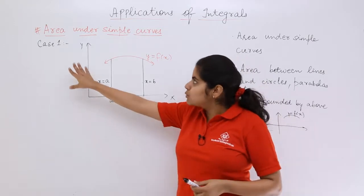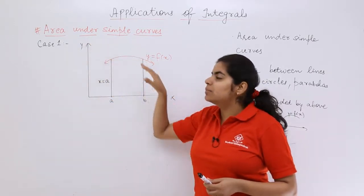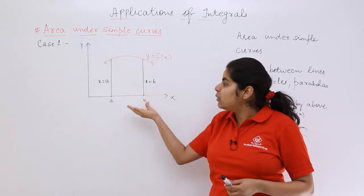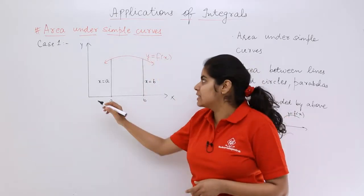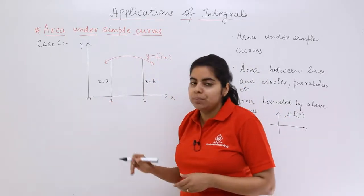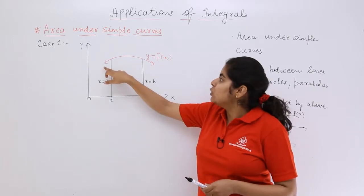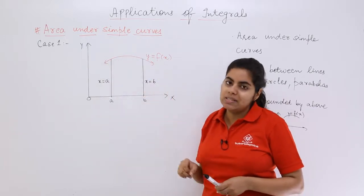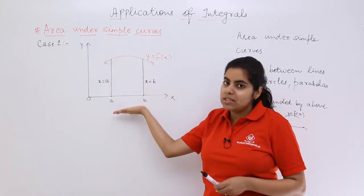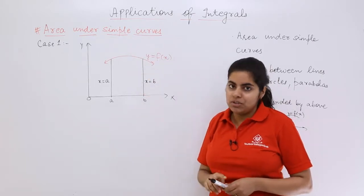when you have the curve entirely above the x-axis. As you can see, if this is the Cartesian plane or the coordinate axes, you have a curve given in front of you, y equals fx, and this is your positive x-axis. The curve is entirely above it.